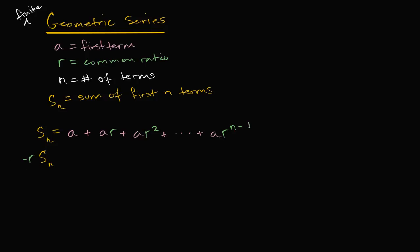So what is this going to be equal to? If we multiply A times negative R, we get negative AR. I'm just going to multiply every one of these terms by negative R — that's the equivalent of multiplying negative R times the sum; I'm distributing the negative R. So A times negative R is negative AR. Then AR times negative R is negative AR squared.